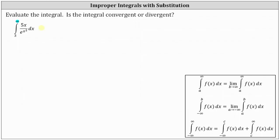The given improper integral is equal to the limit as b approaches infinity of the integral from three to b. Let's also rewrite the integrand function as five x times e to the power of negative x squared dx. Notice how we replace the upper limit of integration with b, and then we have the limit as b approaches infinity of the integral from three to b of five x e to the power of negative x squared dx.